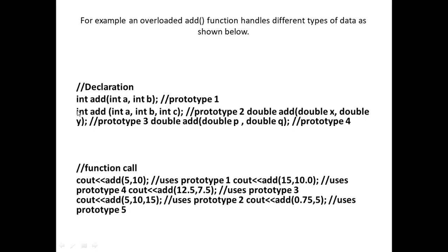So the same function name 'add' is used, but the arguments are changing as well as the data type. During function calling, we write the function name and the arguments — there is no need to specify the return type. Just the function name and the arguments to pass.